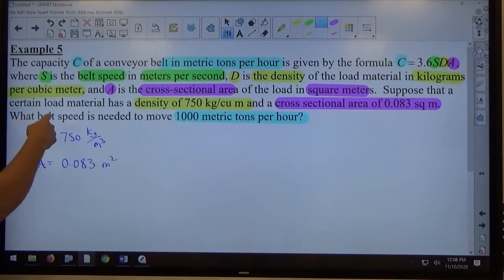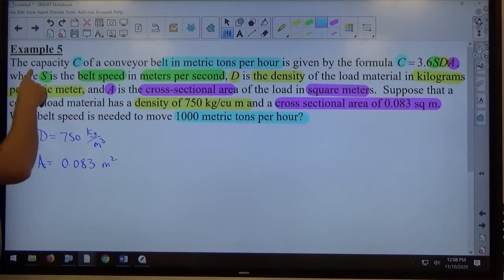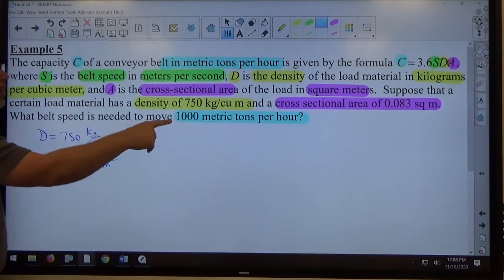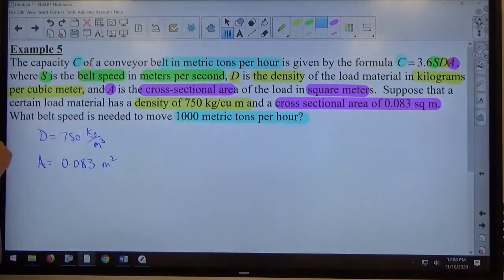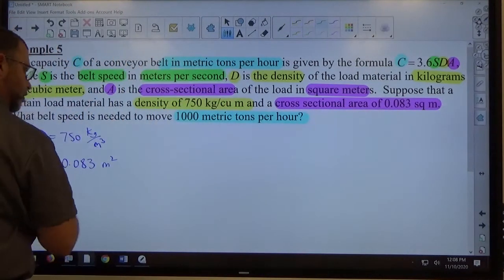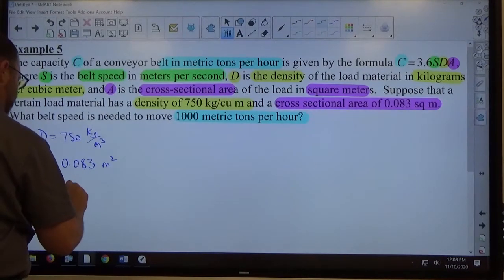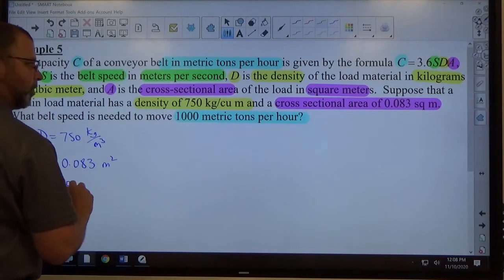It doesn't say that's capacity, but the fact that the unit metric tons per hour matches what C is supposed to be, that tells me that must be C. So C is equal to 1,000 metric tons per hour.